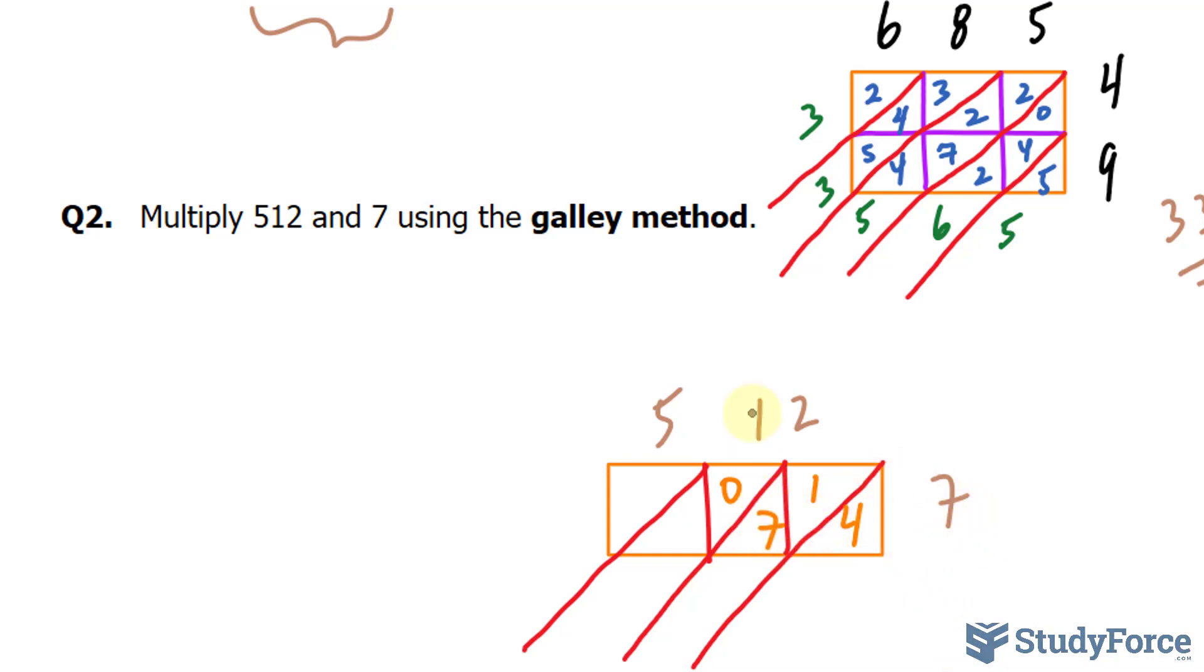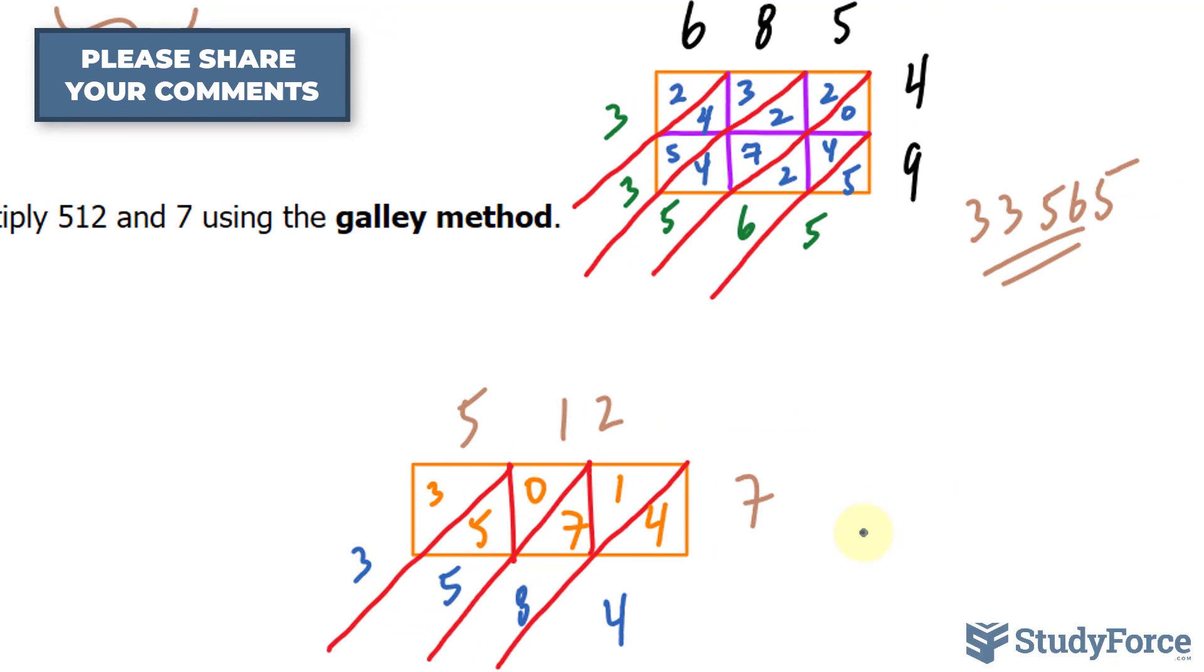7 times 5 is 35. We now go ahead and add the diagonals. We have 4. Here is 8. 5 plus 0 is 5. And that 3. The answer to this is 3,584.